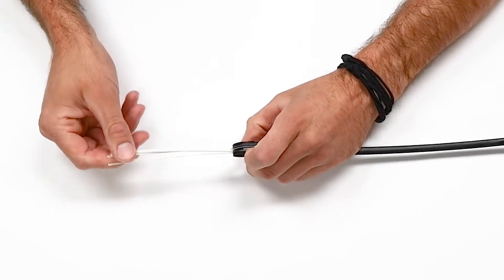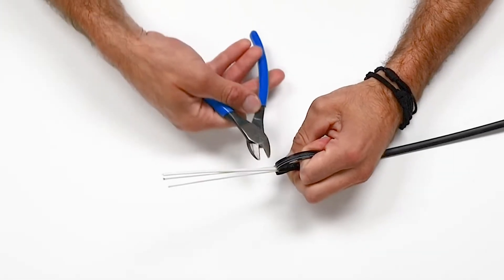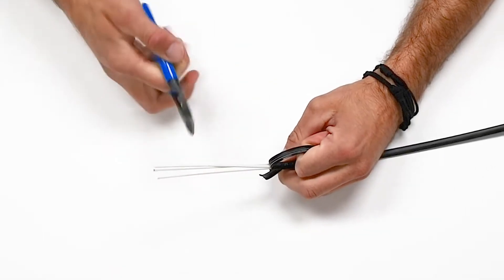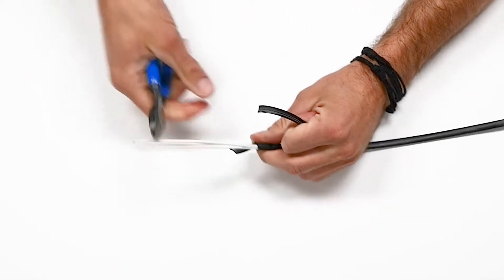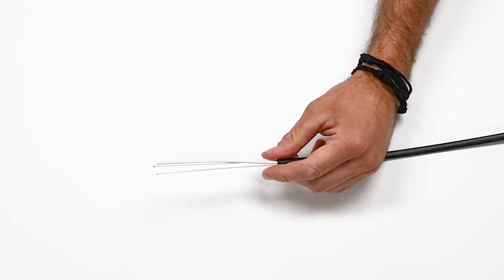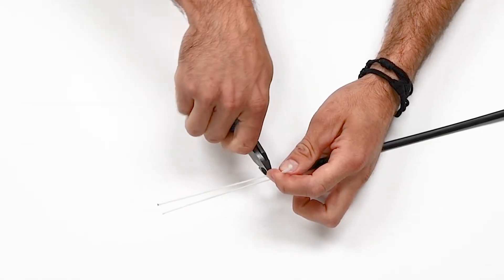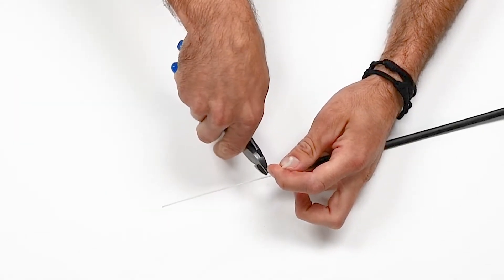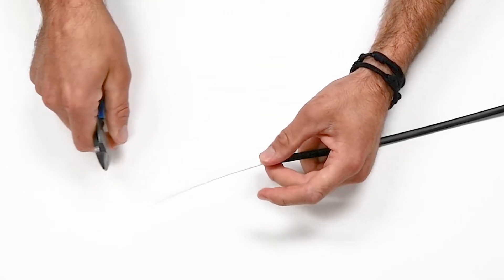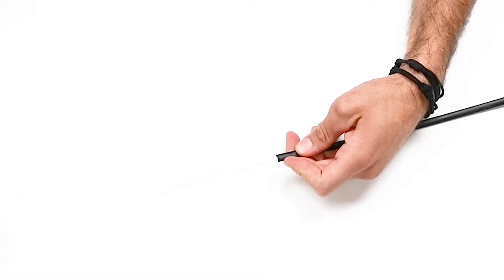And what we want to do is we want to cut away the outer jacketing and the central strength members. Here I'm using pliers, as pliers keep it more uniform, and the flatter and more uniform all of that fiber prep is, the easier and more efficient the install will be. So here I'm cutting away the central strength members, making sure that the central strength members are as flush as possible with the jacketing.